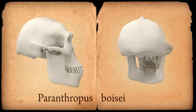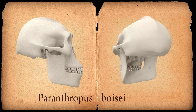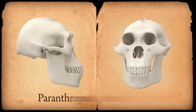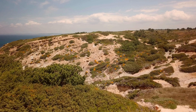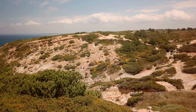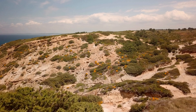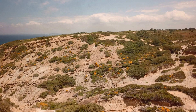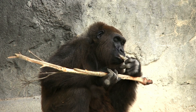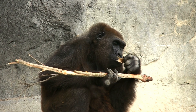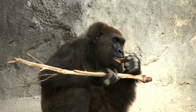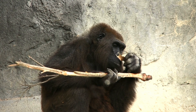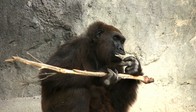Australopithecus species, including those classified as Paranthropus, have distinct features in their faces adapted for chewing tough plant foods, especially during arid conditions around 2.8 to 2.7 million years ago. This is due to robust cheek teeth and mandibular bodies meant for attachment of jaw muscles for powerful vertical biting forces.